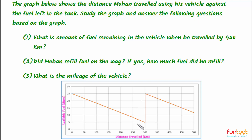A real-life context has been explained with the help of the XY Cartesian coordinate system. The positive direction of the x-axis represents distance traveled in kilometers.